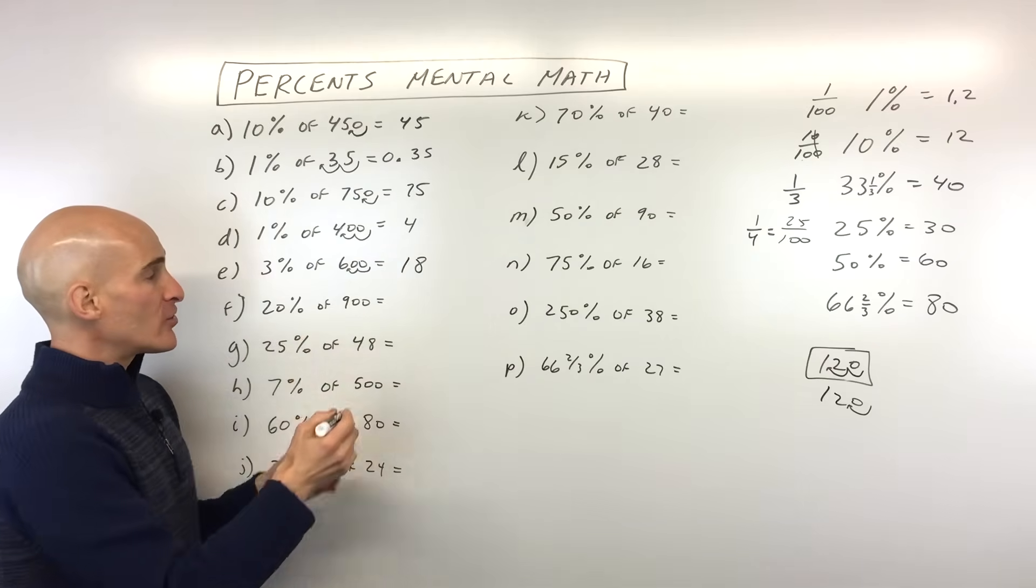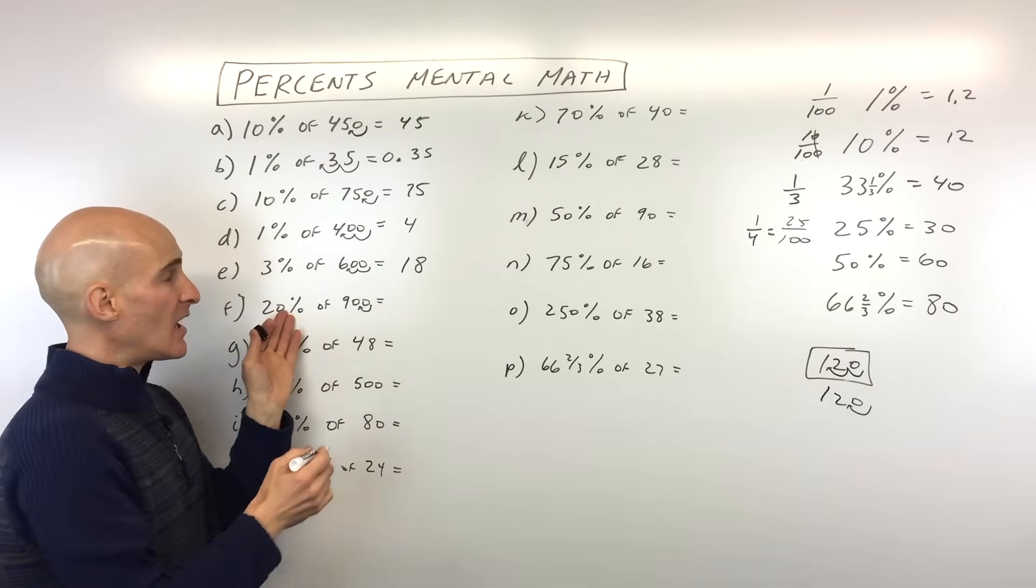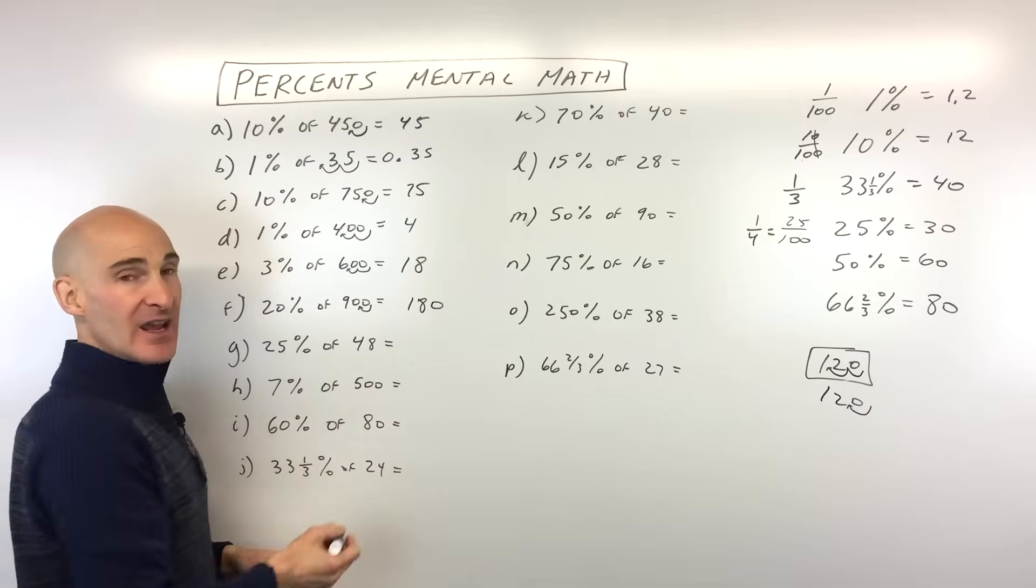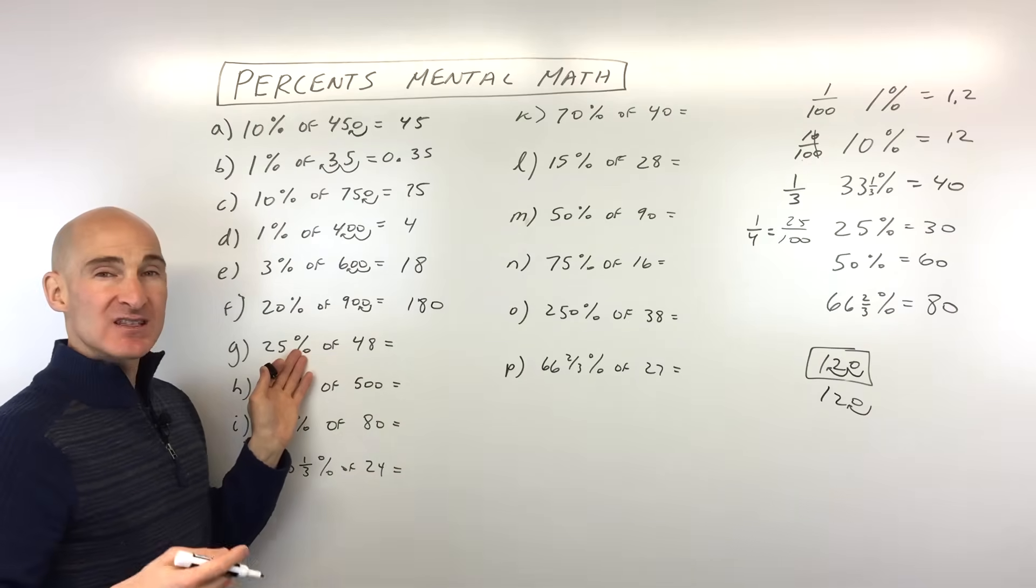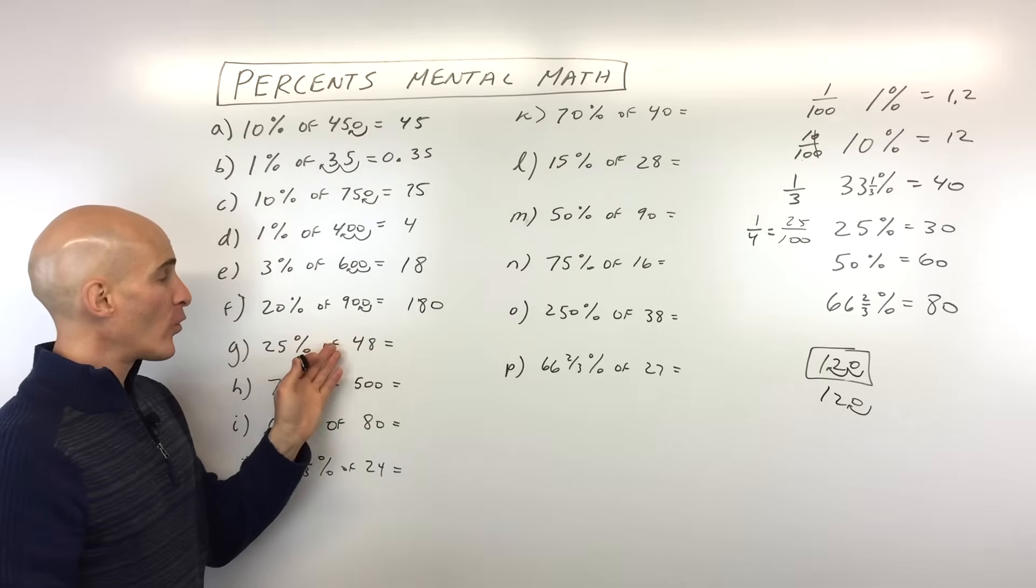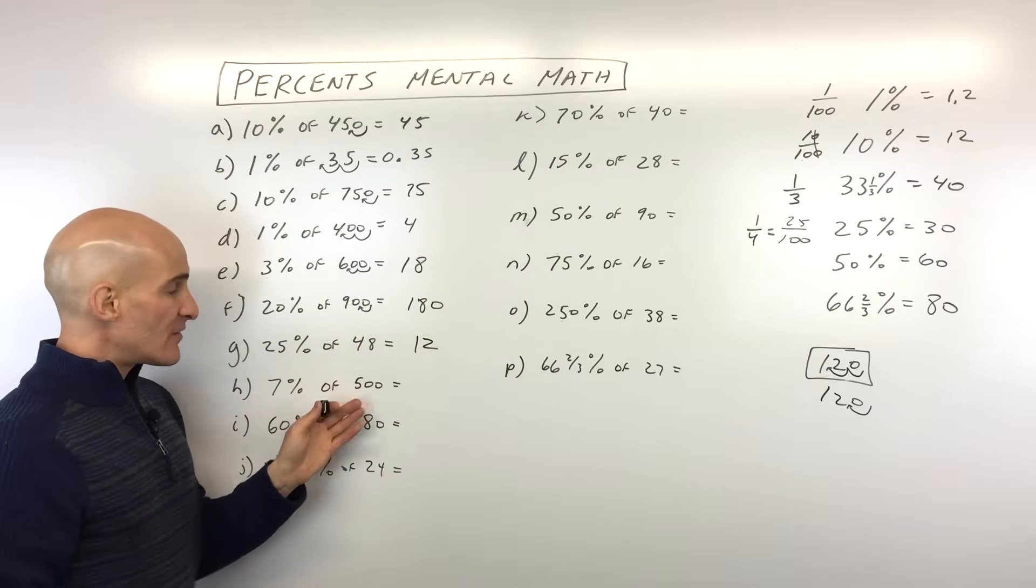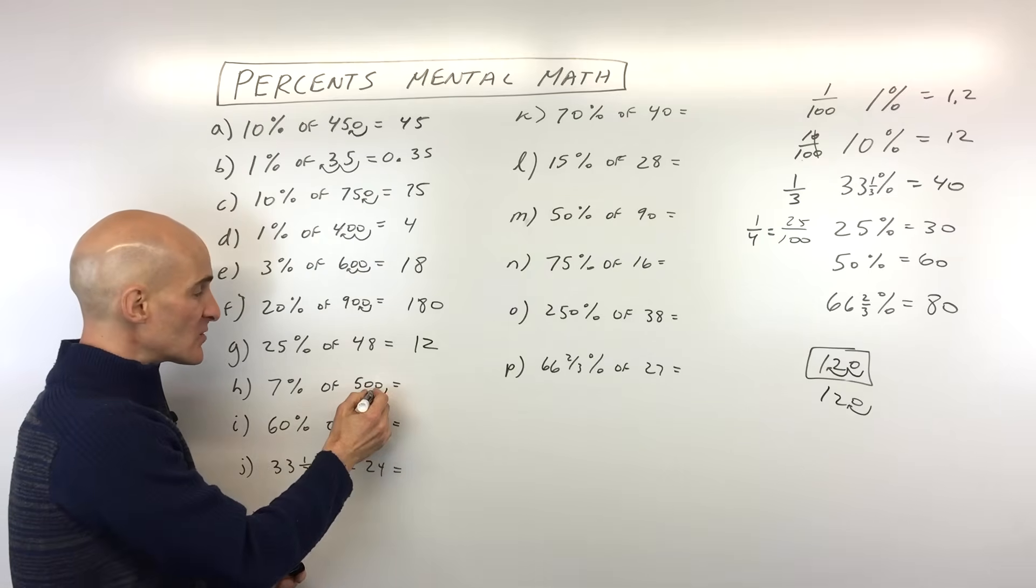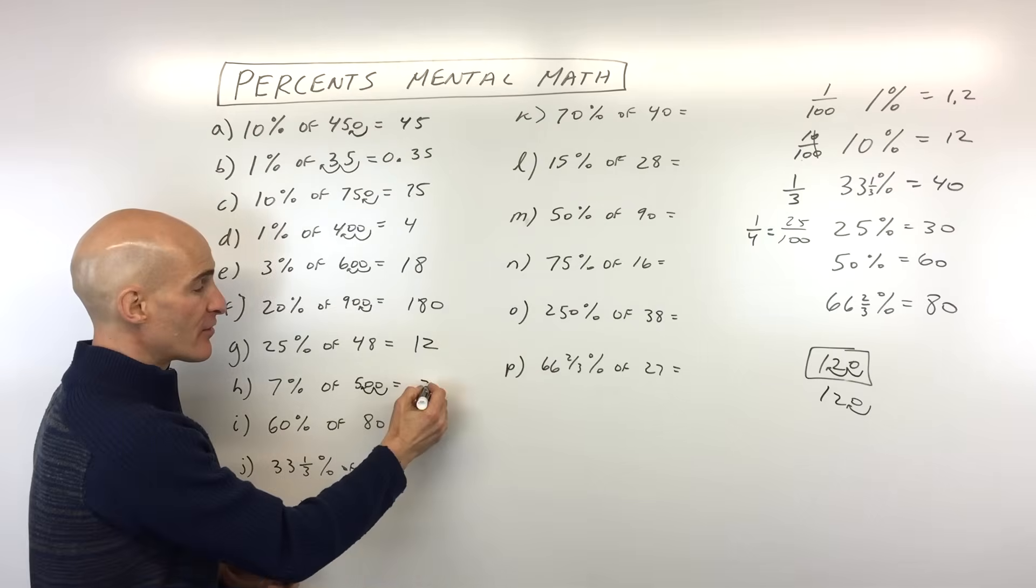20% of 900, let's find 10%. Move that one place to the left. That's 90. 20% is double. So that's going to be 180. 25% of 48. Well, we talked about 25% is like one quarter or dividing by four. If we divide this by four, we get 12. 7% of 500. Well, let's find out what 1% is. Move that two places to the left. That's 5. 7 times 5 is 35.